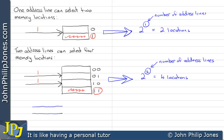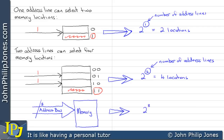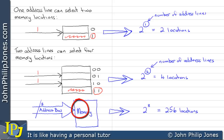Let's draw a schematic representation of an address bus. I'll label this as the address bus, put a line through it and label it 8, meaning we have 8 address lines. That means we are addressing this memory chip, and consequently we have 2 to the 8, which gives us 256 locations. So an address bus with 8 lines allows us to address one of 256 memory locations.